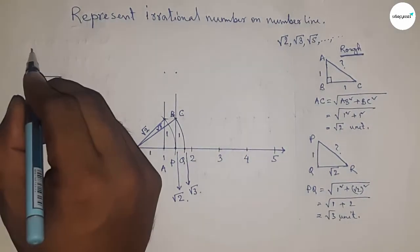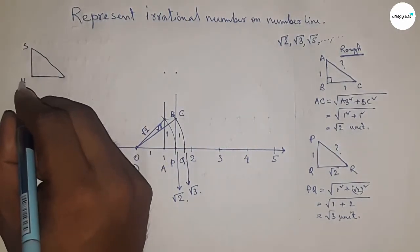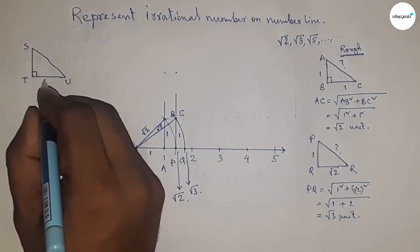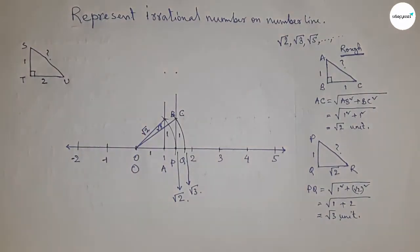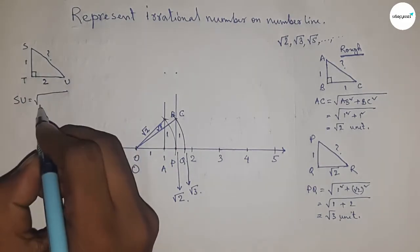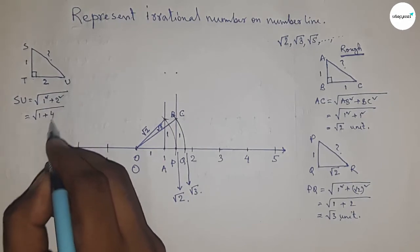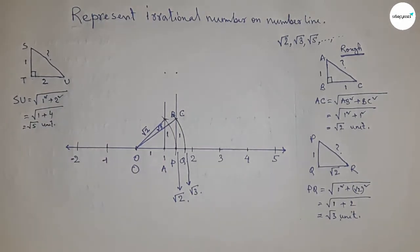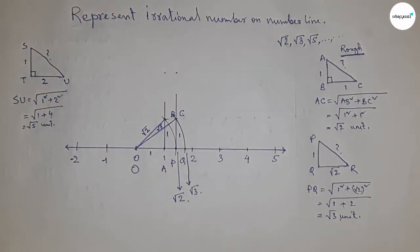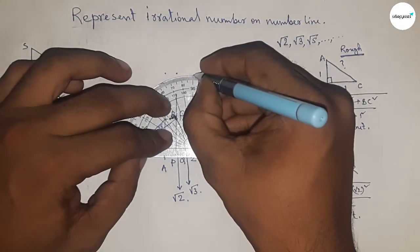Next, talking about root 5. The concept: if there is a right angle triangle STU with base equal to 2 units and height equal to 1 unit, then what is the hypotenuse? By the Pythagorean theorem, hypotenuse equals root over base squared plus height squared, which is root of 1 squared plus 2 squared, giving root 5 units. Applying this concept between 0 and 2, first draw a 90 degree angle at point 2 using a protractor.